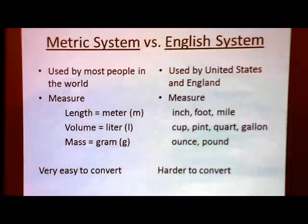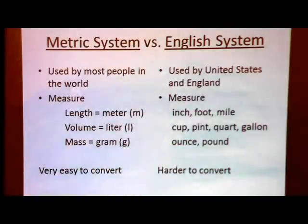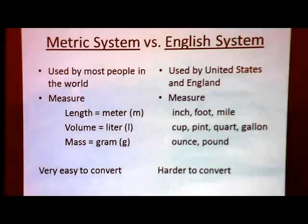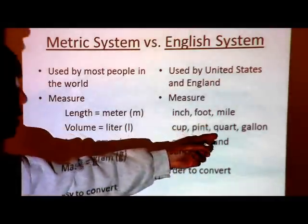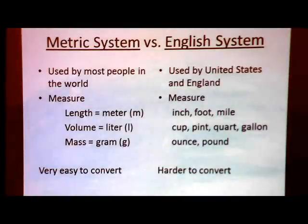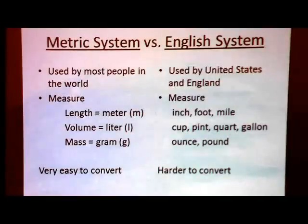In the English system there are multiple units and they're all different. For length we have inch, foot, yard, mile, etc. For volume we have cup, pint, quart, or gallon. For mass we have ounce or pound. The difficulty in the English system is there's no set rule — you just have to memorize the conversion factor. For example, 16 ounces in a pound, 2 cups in one pint, 4 quarts in one gallon, 12 inches in a foot, 3 feet in a yard. In the metric system it's very simple — everything is base 10. One digit over is either 10 greater or 10 less than the previous digit.